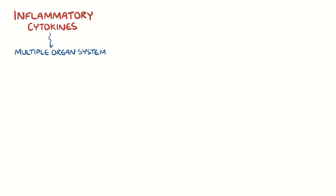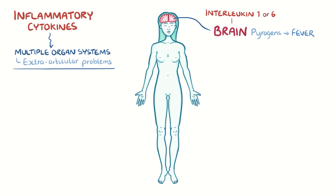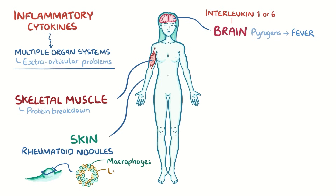These inflammatory cytokines don't just stay within the tight joint space. Instead, they escape through the bloodstream and reach multiple organ systems, causing extra-articular problems — meaning problems beyond the joint space. For example, interleukin 1 or 6 travel to the brain, where they act as pyrogens, inducing fever. In skeletal muscle, they promote protein breakdown, and in the skin as well as many visceral organs, they lead to the formation of rheumatoid nodules — round-shaped collections of macrophages and lymphocytes with a central area of necrosis, or tissue death.